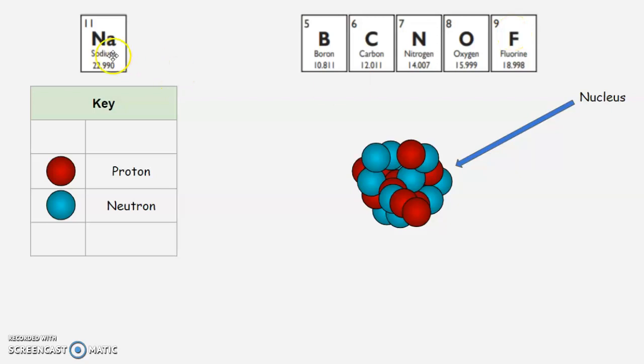So let's look at our sodium here. Sodium, this rounds up to 23. 23 minus 11 is 12. So sodium would have 12 neutrons in the middle.